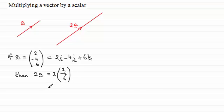And that clearly gives us the column vector 4, minus 8, 12, just by doubling each of the values in the vector.